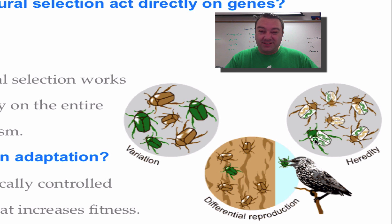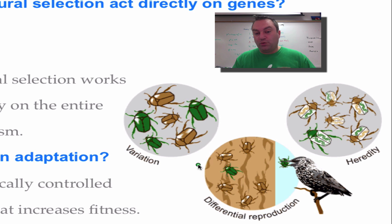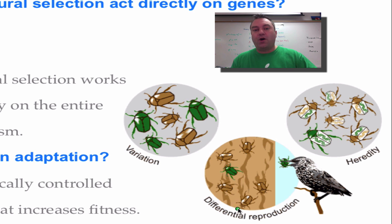Now, was natural selection selecting just the green allele? No — it was going after green individuals, and their phenotype is determined by all of the genes that they have, not just a single one.